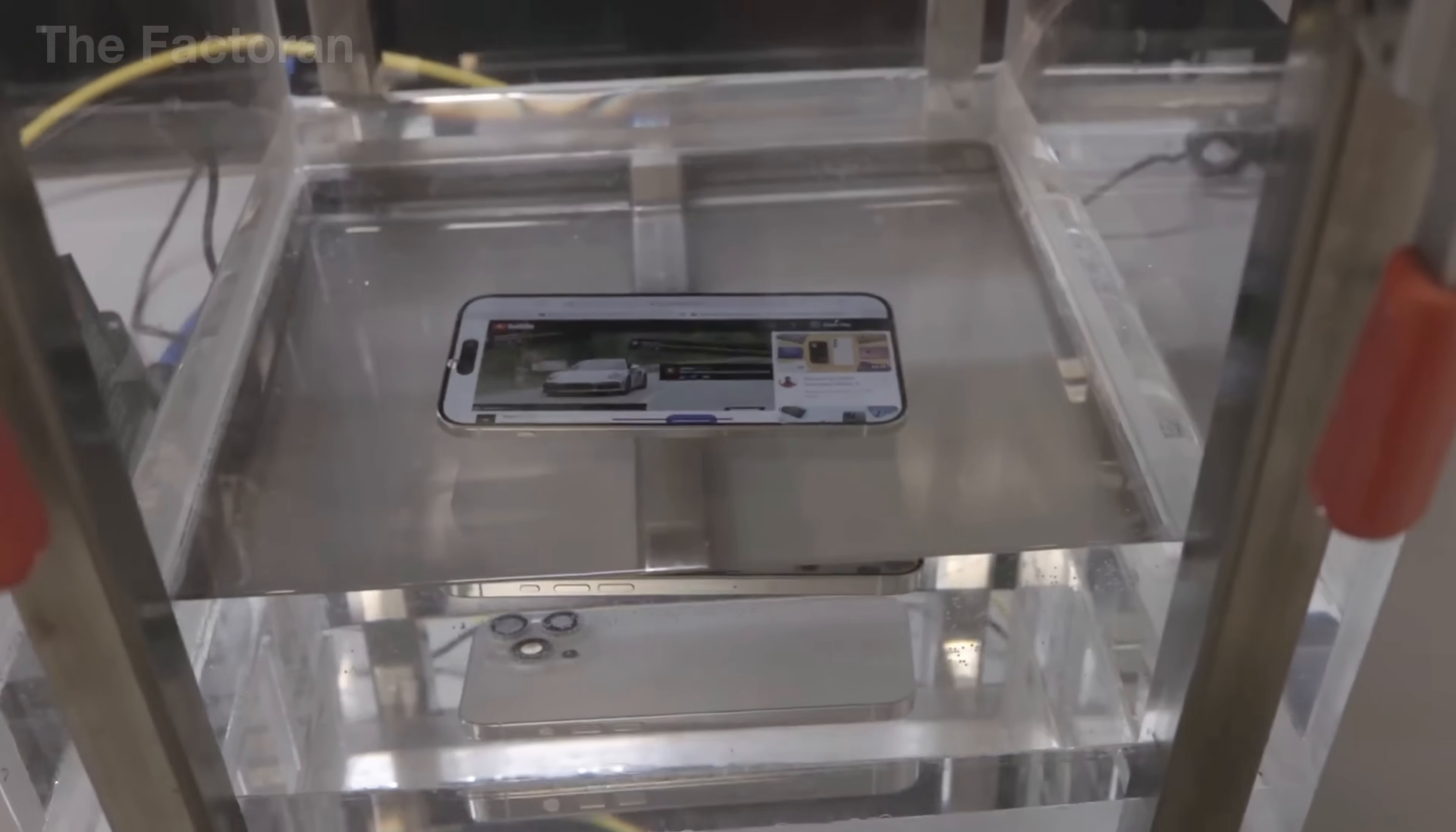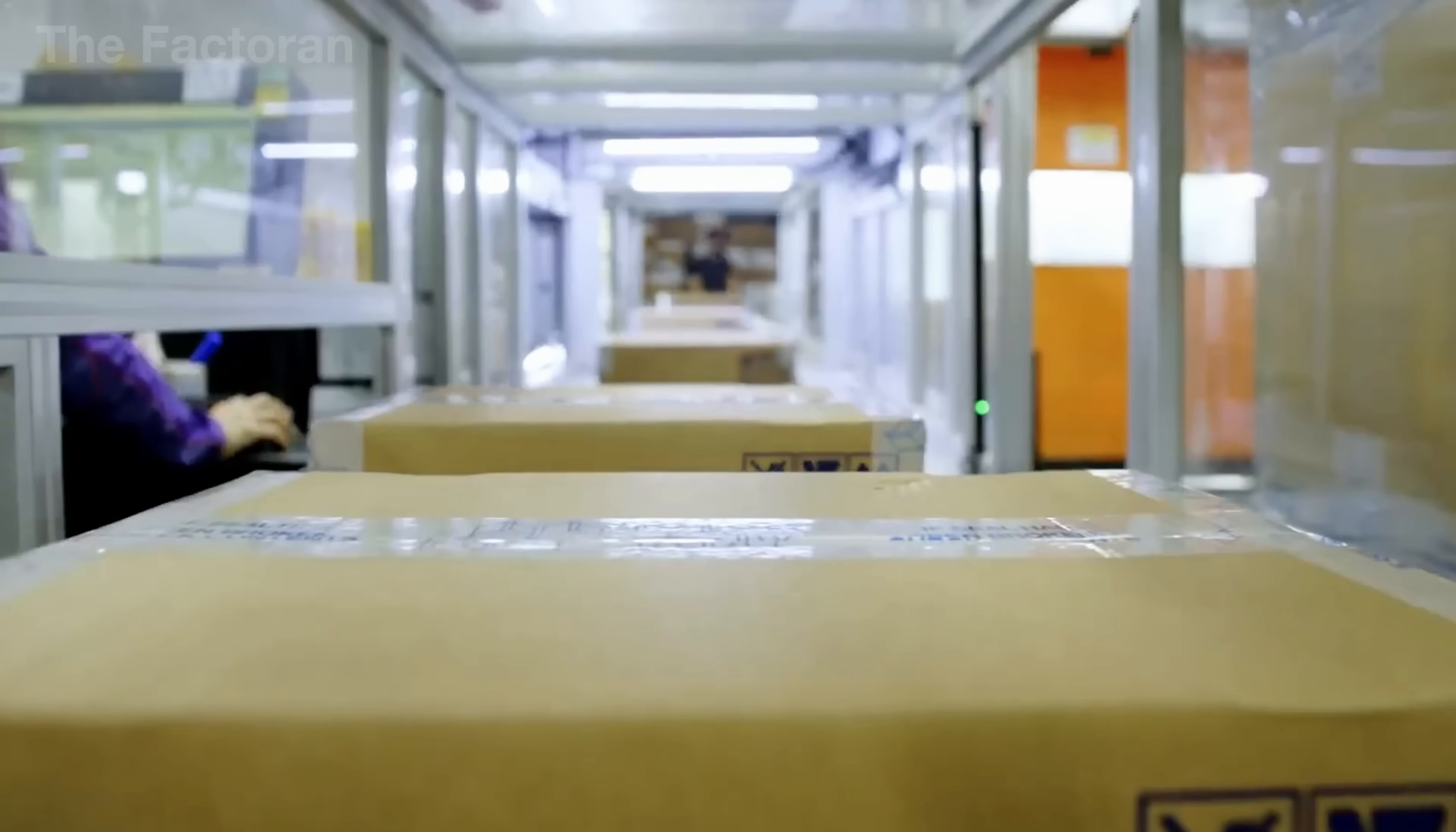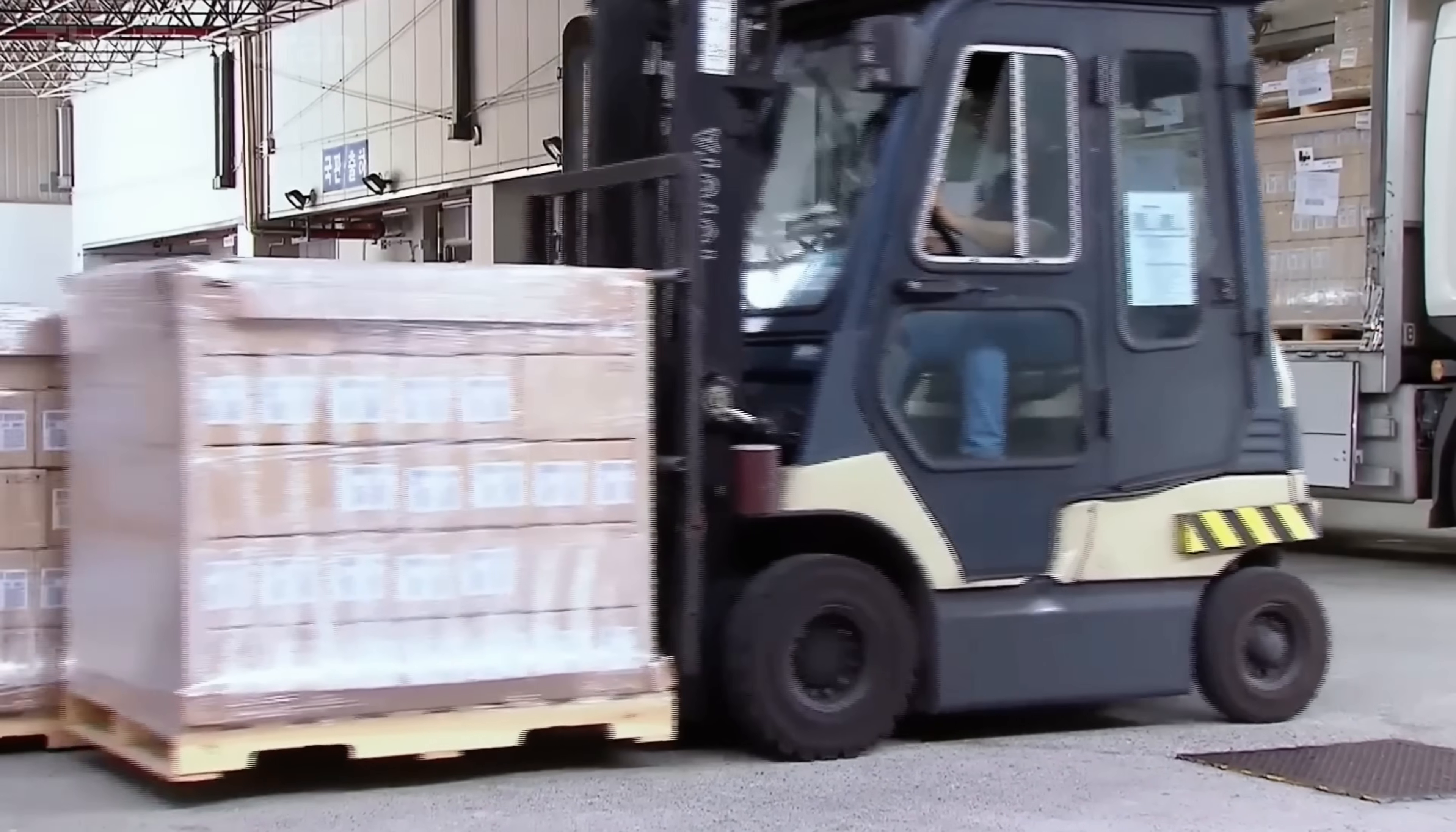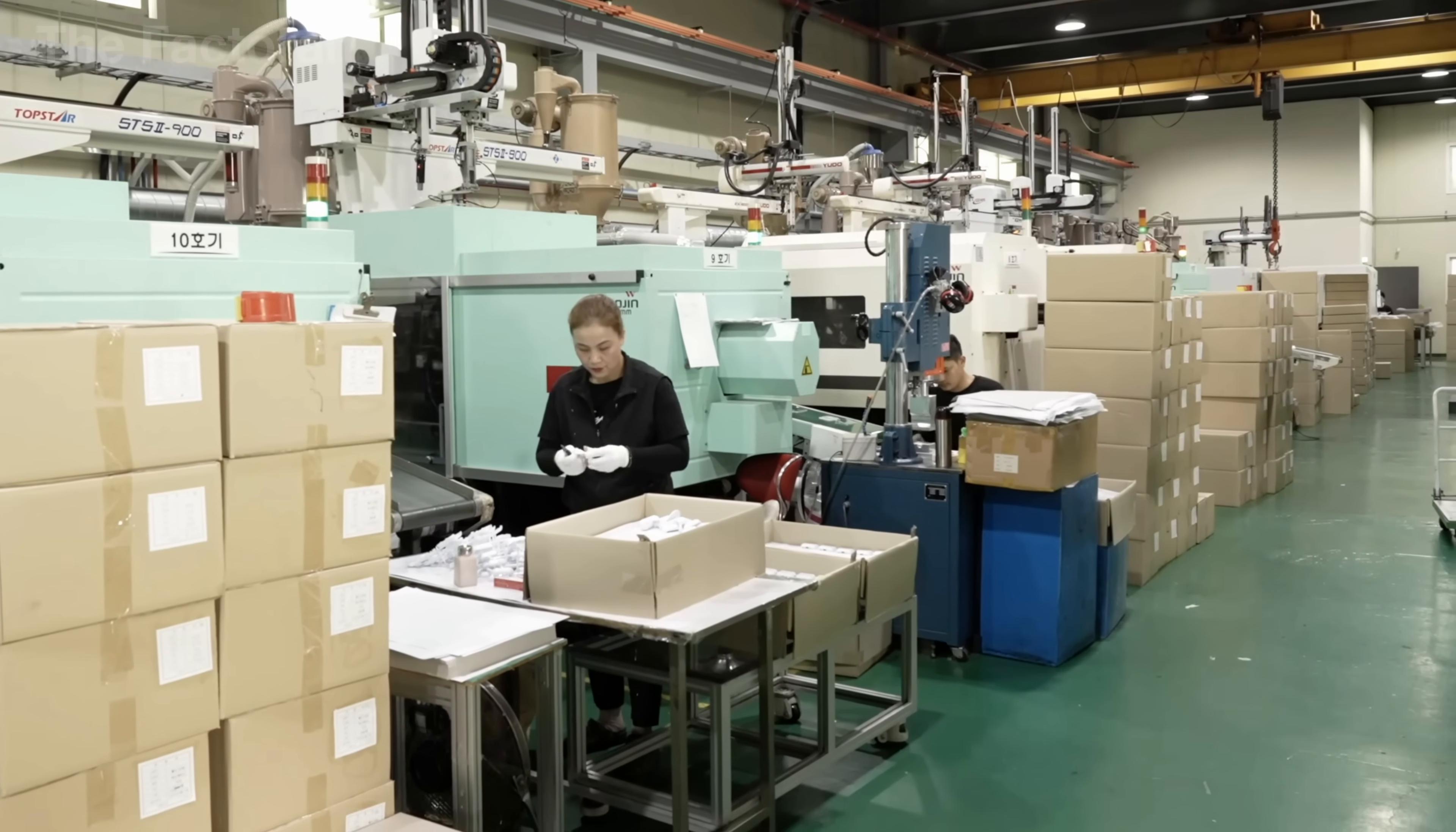Once an iPhone has successfully passed hundreds of rigorous tests, it enters a stage that may appear simple at first glance, yet is astonishingly sophisticated: packaging. Each pallet containing hundreds of iPhones must have its weight perfectly balanced to prevent tilting or shifting during air transport. This meticulous attention to detail is precisely why iPhones rarely arrive damaged in the hands of users. Every shipment is packed with the precision and care of a military-grade cargo operation.